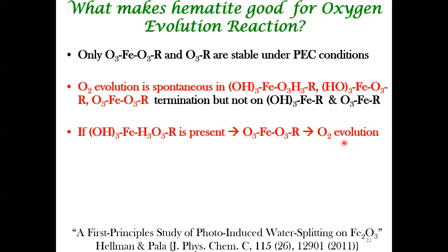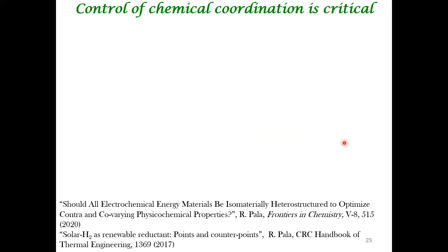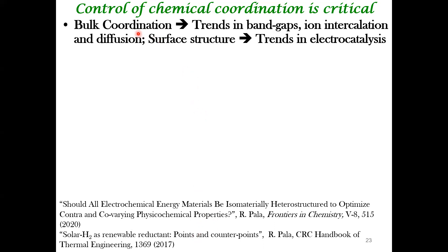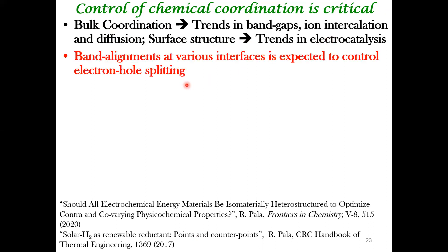The purpose of these lectures is not only to teach computation methods for analyzing these systems, but also to understand the frontiers of research in this field. Manipulating chemical coordination is very critical: controlling bulk coordination lets you control band gaps, which matters for solar cells and semiconductor photoelectrochemistry. It also controls ion intercalation — important for batteries such as lithium-ion batteries where lithium diffusion matters. Surface structure controls trends in electrocatalysis for OER, ORR, and photoelectrochemistry.